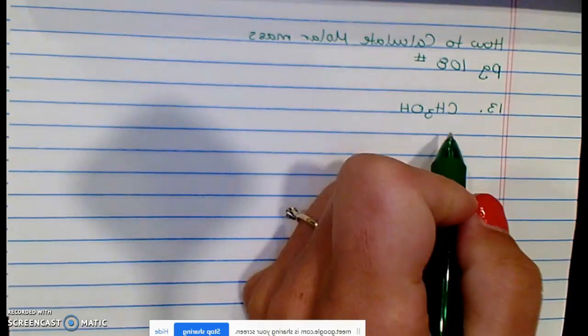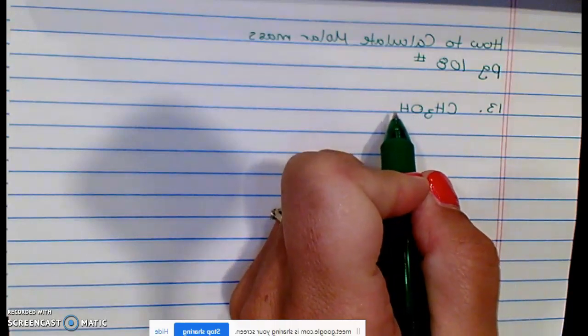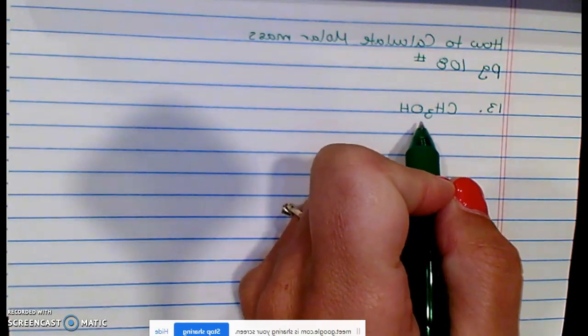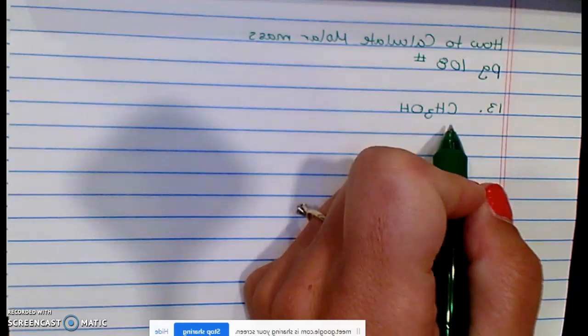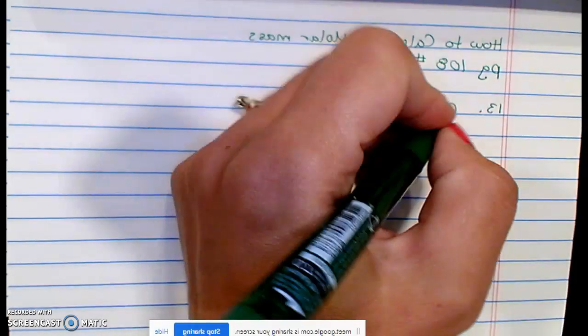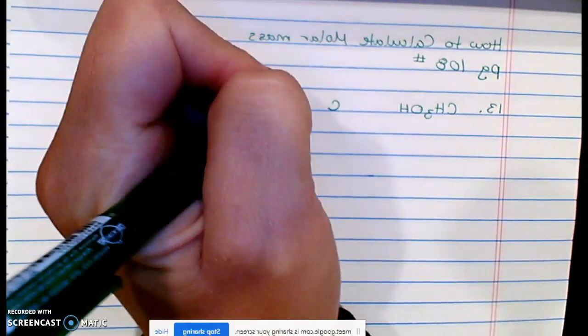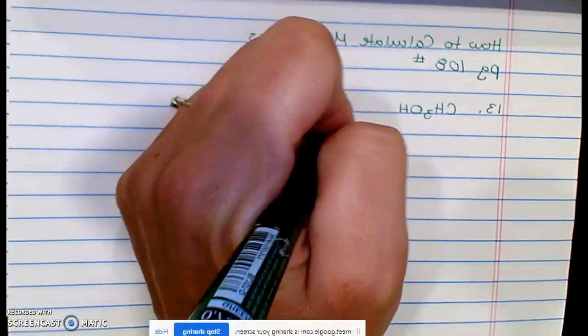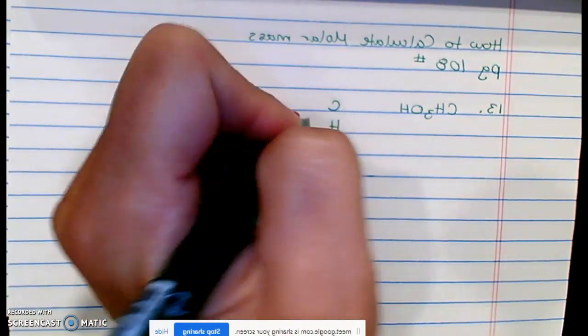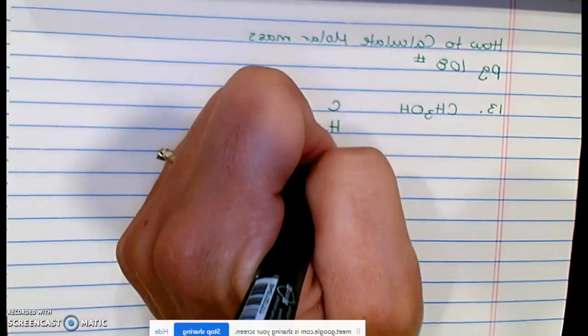Okay, so first we'll start by figuring out how many atoms of each element there is. How many carbons do I have? One. How many hydrogens do I have? Four. Okay, how many oxygens do I have? One.